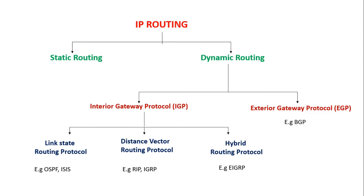Distance vector routing protocol does not have the entire topology like link state routing protocol. It works by route-by-rumor, meaning routing information is shared with neighbors at every certain period of time. The main metric used in distance vector routing protocol is distance, and it has slow convergence compared to link state. Examples include RIP and EIGRP. The hybrid routing protocol combines the advantages of both link state and distance vector routing protocols, and a good example of hybrid routing protocol is EIGRP.